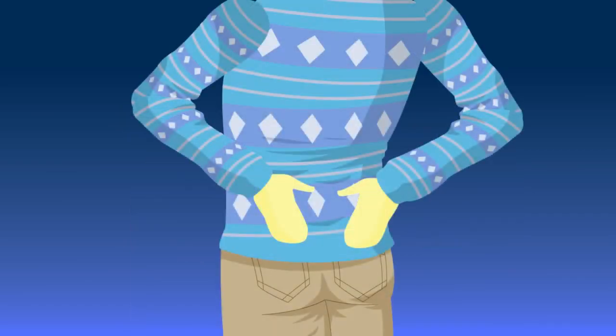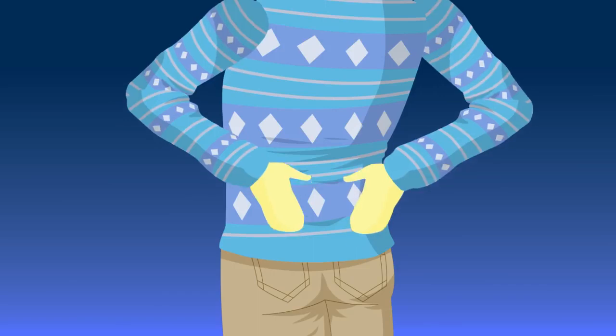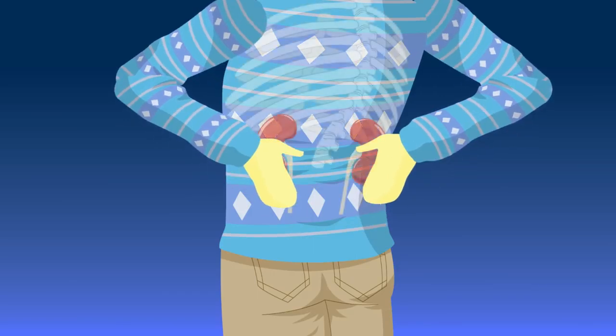Your kidneys are bean shaped organs that are about the same size as a computer mouse. To find your kidneys, put your hands on your lower back and slide them up until you feel your ribs. Your kidneys are just behind a layer of muscle there.